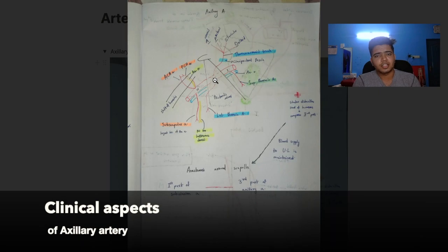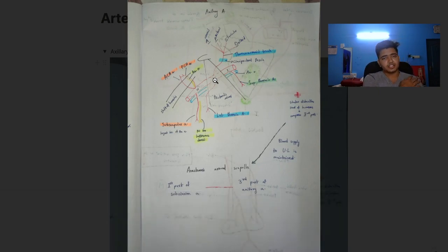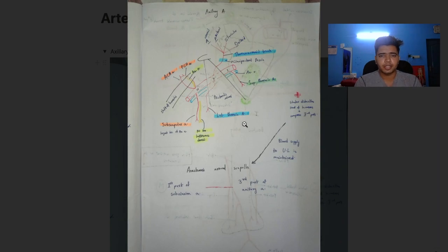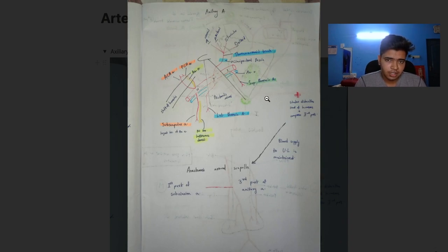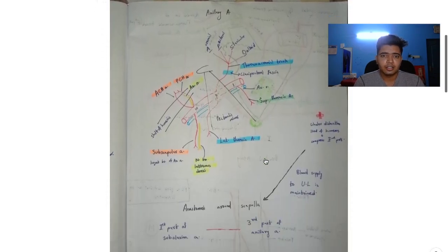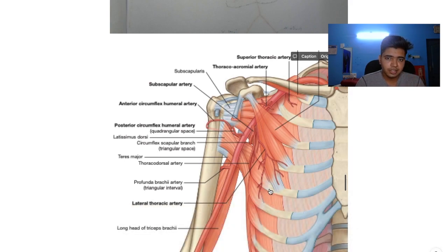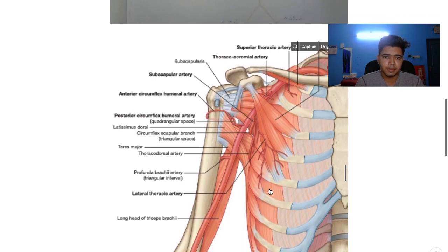Now let's brush up on the clinical aspects of the axillary artery. When the shoulder is dislocated, the head of the humerus goes and compresses the second part of the axillary artery. The blood flow will stop and it might lead to necrosis of the limb. To prevent that, anastomosis naturally occurs between the first part of the subclavian artery and the third part of the axillary artery, to ensure that if there is any compromise of blood supply, these anastomotic branches compensate the blood supply of the upper limb.